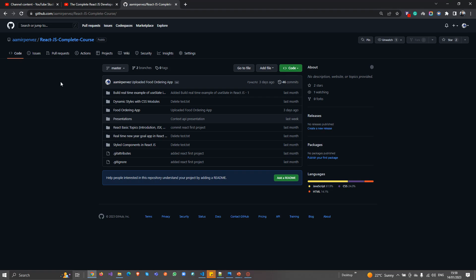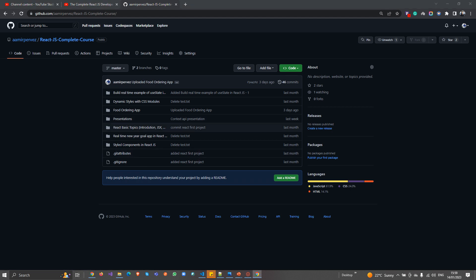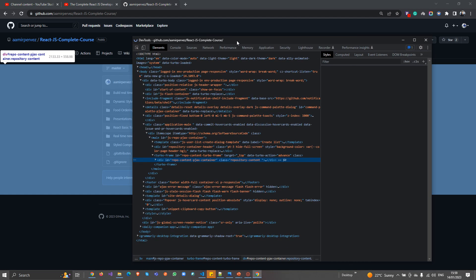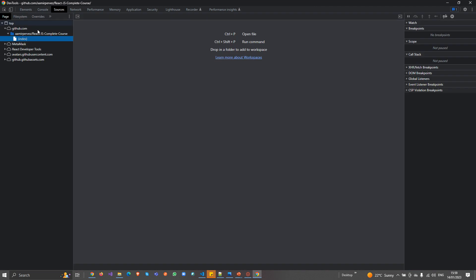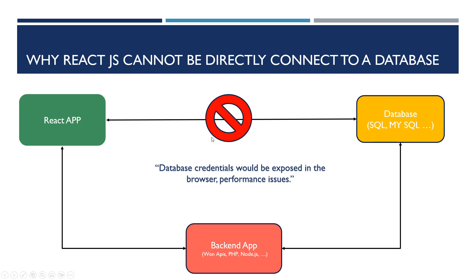If you go to the browser and right-click to do inspect element, you can easily find the source code right there. You can go into the Sources tab and find details about that website. This means that if we had any database credentials in there, they would be fully exposed in the browser.